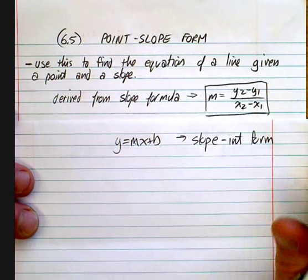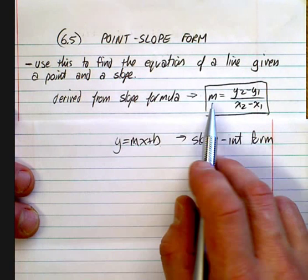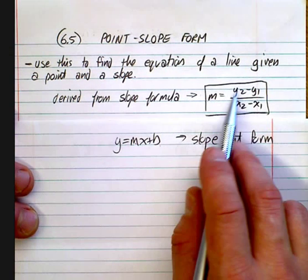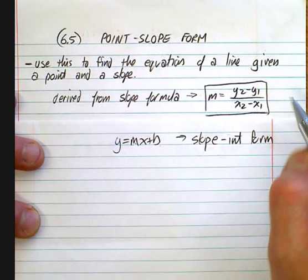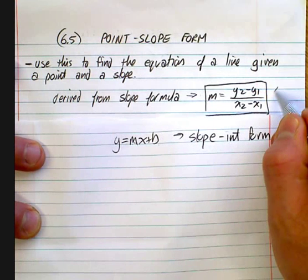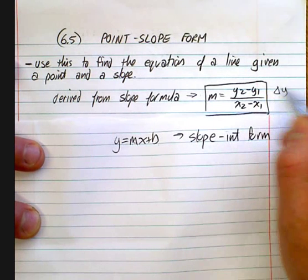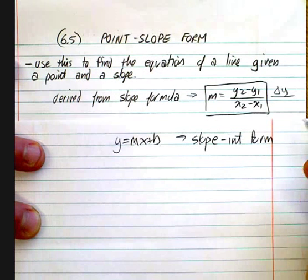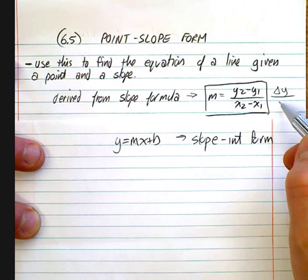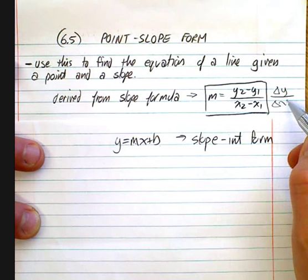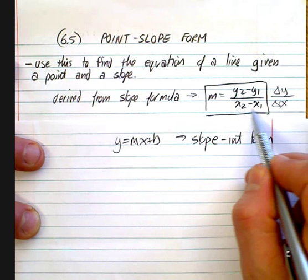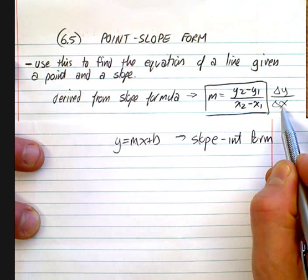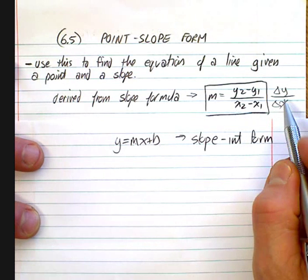It's derived from the slope formula, which is basically saying that m is your change in y. So you take one y, subtract the other — that shows you the difference. Then you take the two x's and look at the difference between them, and that's your change in x. That's how we find our slope.